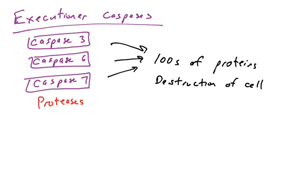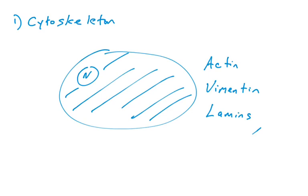In this video we're not going to cover hundreds of proteins, we're just going to give a couple examples of substrates for executioner caspases. So the first group of proteins that we're going to talk about are the proteins that make up the cytoskeleton of a cell.